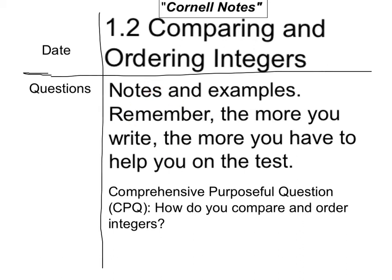Quad means four, and it's a quadrant. In quadrant one, you have your title: 1.2, Comparing and Ordering Integers.